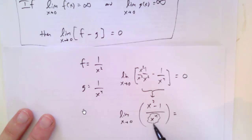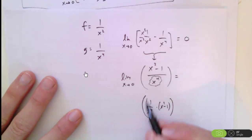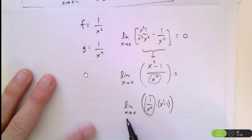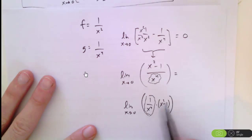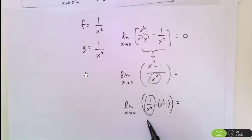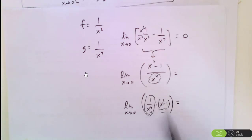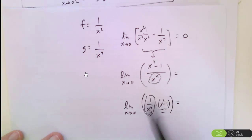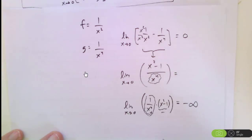As X approaches 0, X squared minus 1 approaches negative 1, while 1 over X to the 4th approaches infinity very quickly. Rewriting as 1 over X to the 4th times (X squared minus 1), the magnitude goes to infinity but the value is negative. Looking at left-hand and right-hand limits, when X approaches 0 from either side, the expression is negative. So the overall limit is negative infinity, not 0.